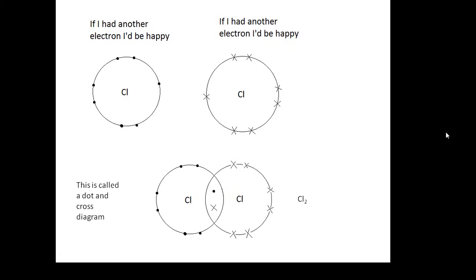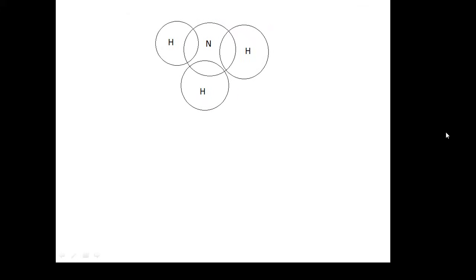And this is a dot and cross diagram. Here's another one. This is an ammonia molecule, NH3. So a nitrogen and three hydrogens. And here's our dot and cross diagram. So the hydrogens are happy because they've got two electrons now. And the nitrogen is happy because it's got eight. So NH3, that's ammonia.